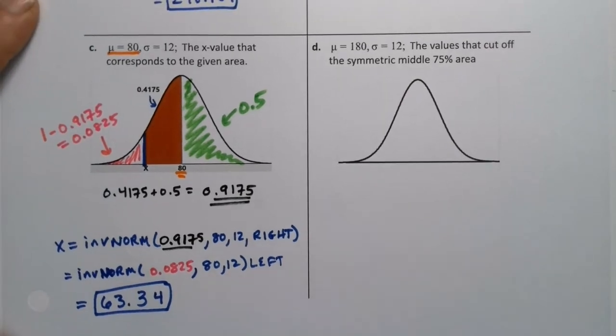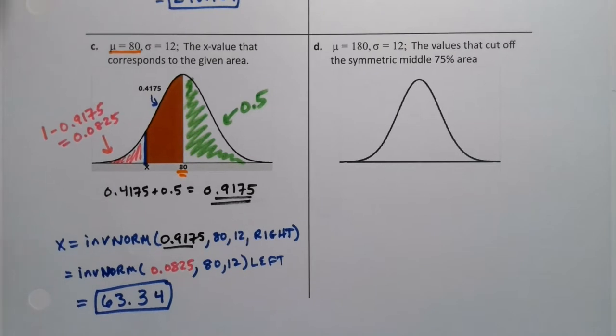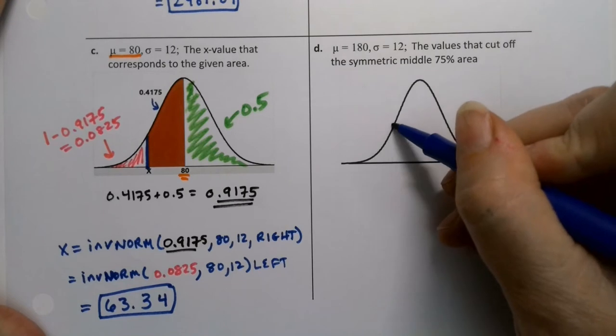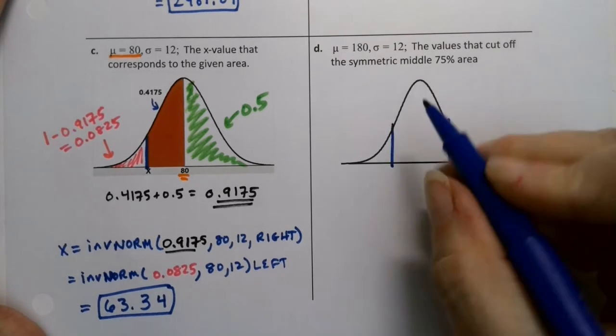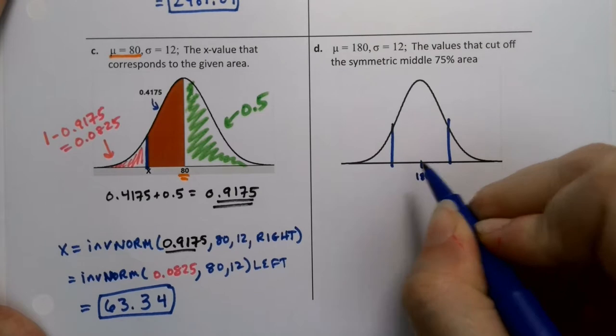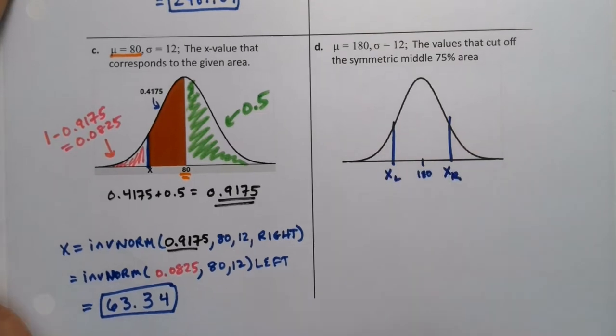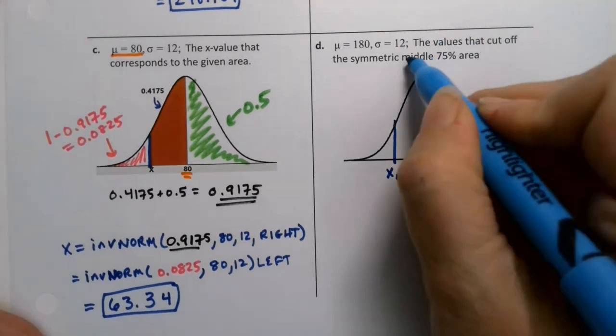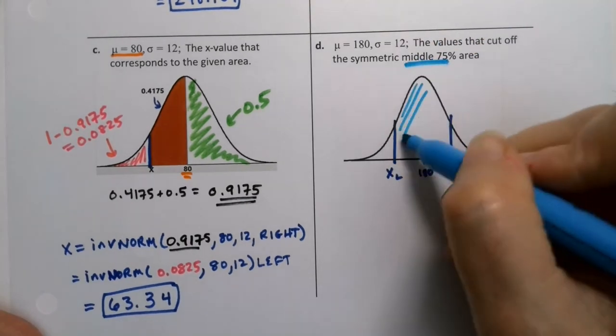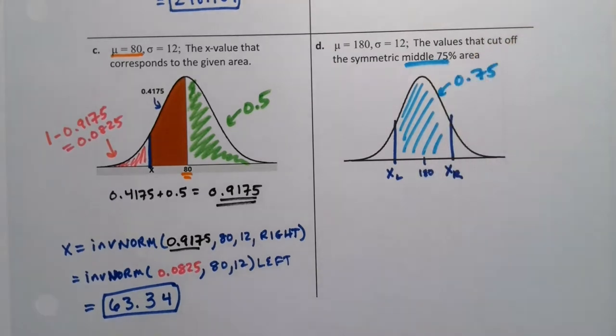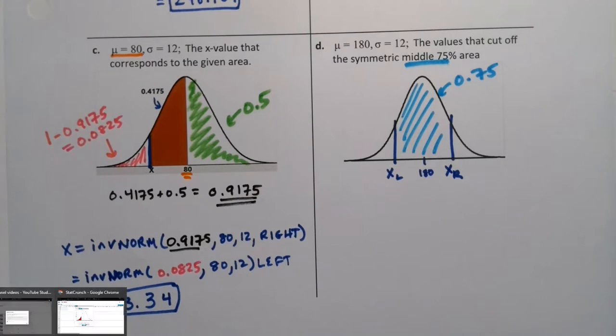All right. The last one. All right. So the middle, 75%. Okay. So we have two scores here and here. I know that the center is 180. And I'm looking for an x on the left and an x on the right. But I know that this middle is worth 75%.